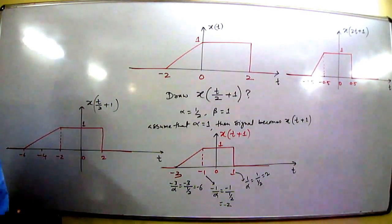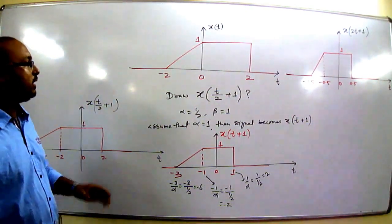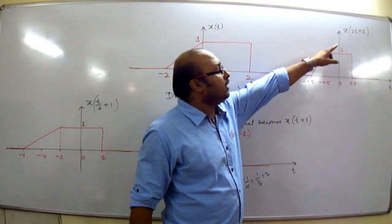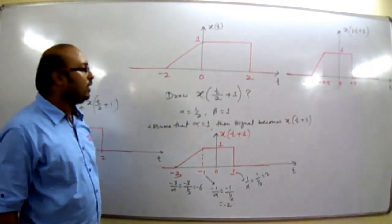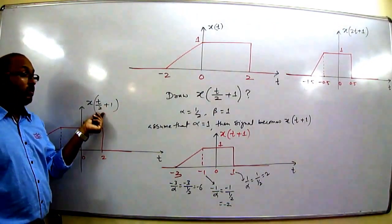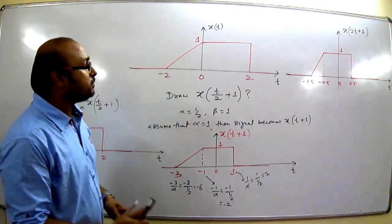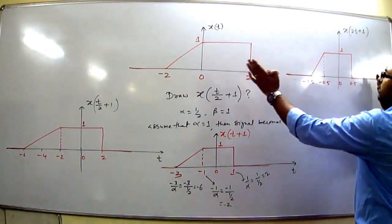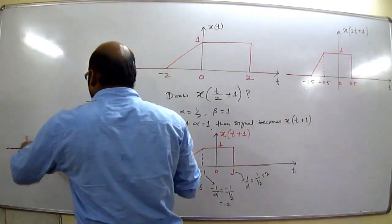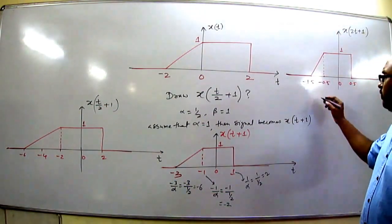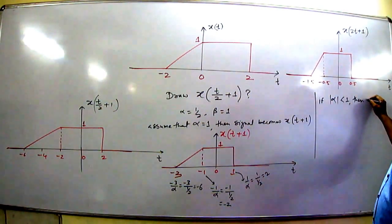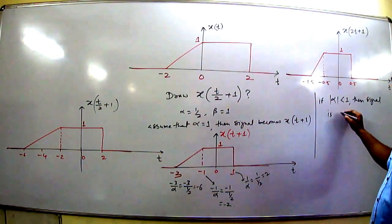This is X(T/2 + 1). In the two examples we have drawn X(2T + 1) and X(T/2 + 1) from X(T). In the first case α = 2, so |α| > 1, and the signal X(T) is compressed. In the second case α = 1/2, so |α| < 1, and the signal X(T) is expanded. We conclude: if |α| > 1, the signal is compressed; if |α| < 1, the signal is expanded.